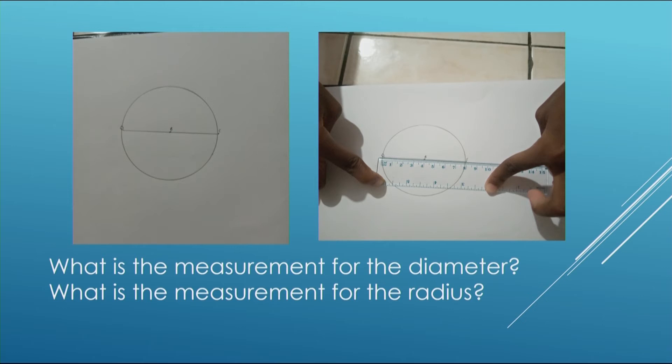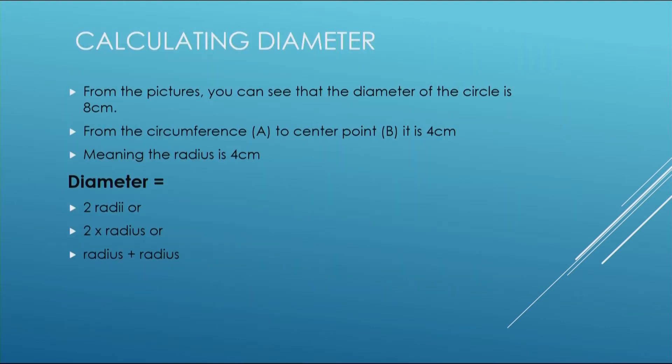Let's proceed with the lesson. We have known how to measure the radius and also how to measure the diameter — the diameter is that line which runs across, and the radius is half of that line. The next step we move on to calculating diameter.